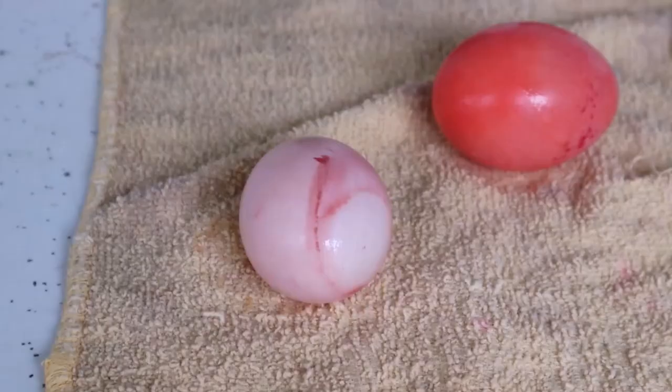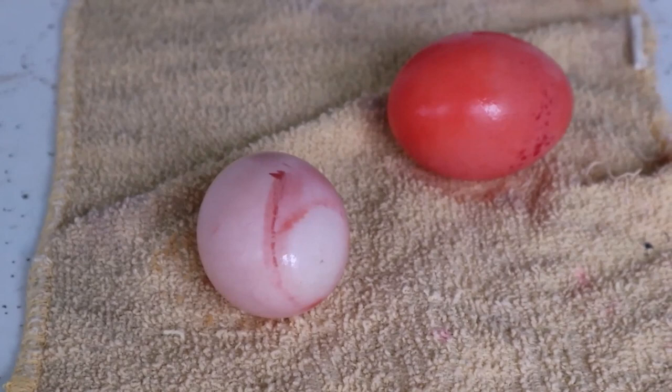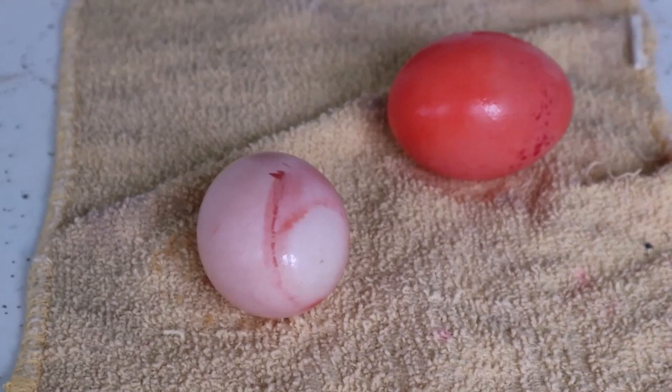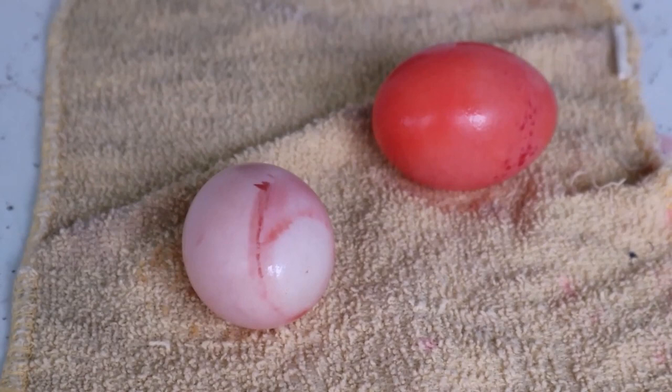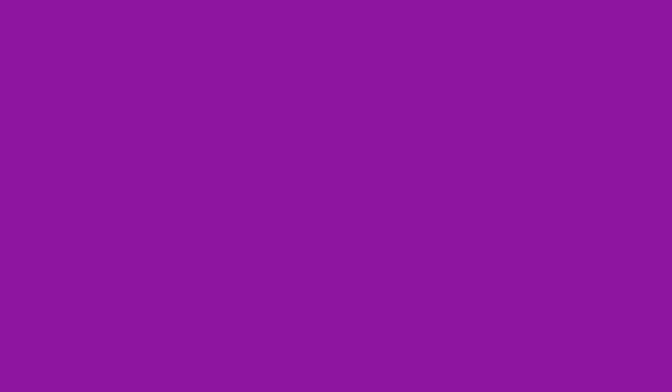You can try placing eggs into different solutions in order to classify them as well. One suggested solution would be corn syrup. Try putting an egg into corn syrup overnight, then the next day, place it into a cup of water. Be sure to measure and observe your egg through each phase.